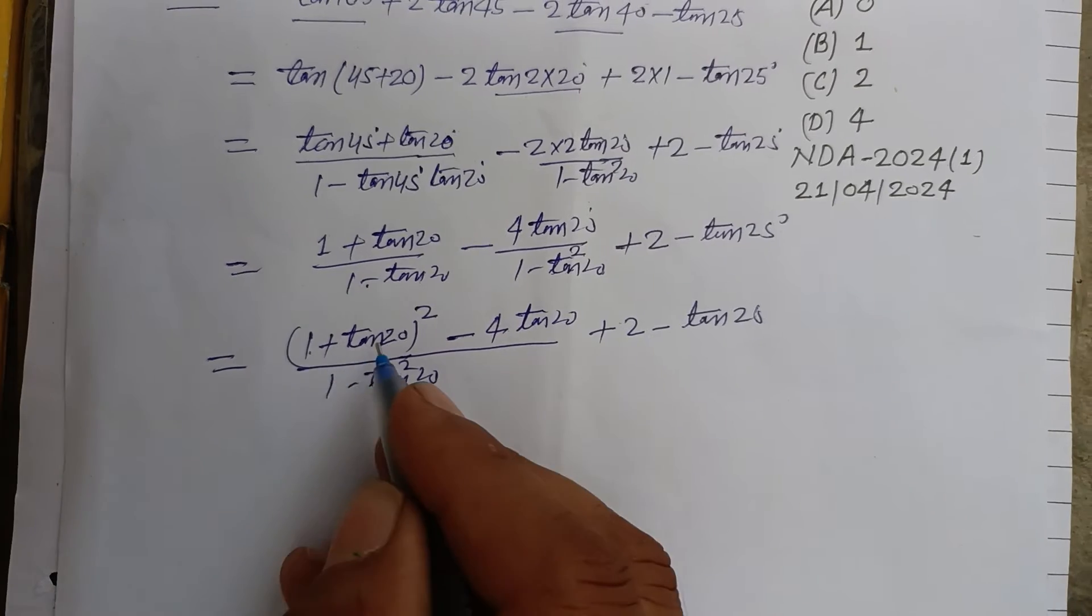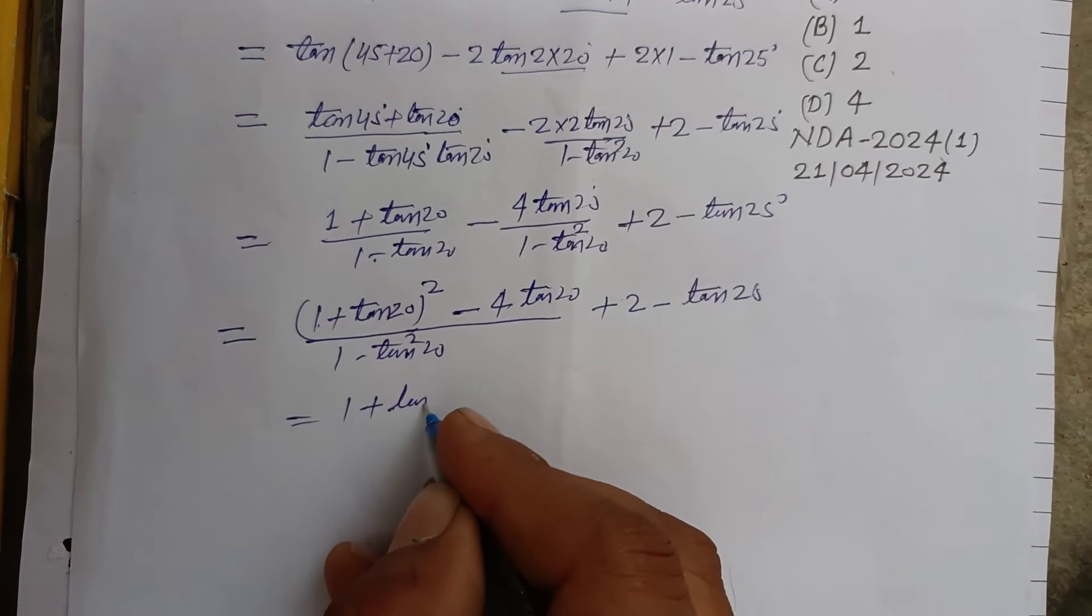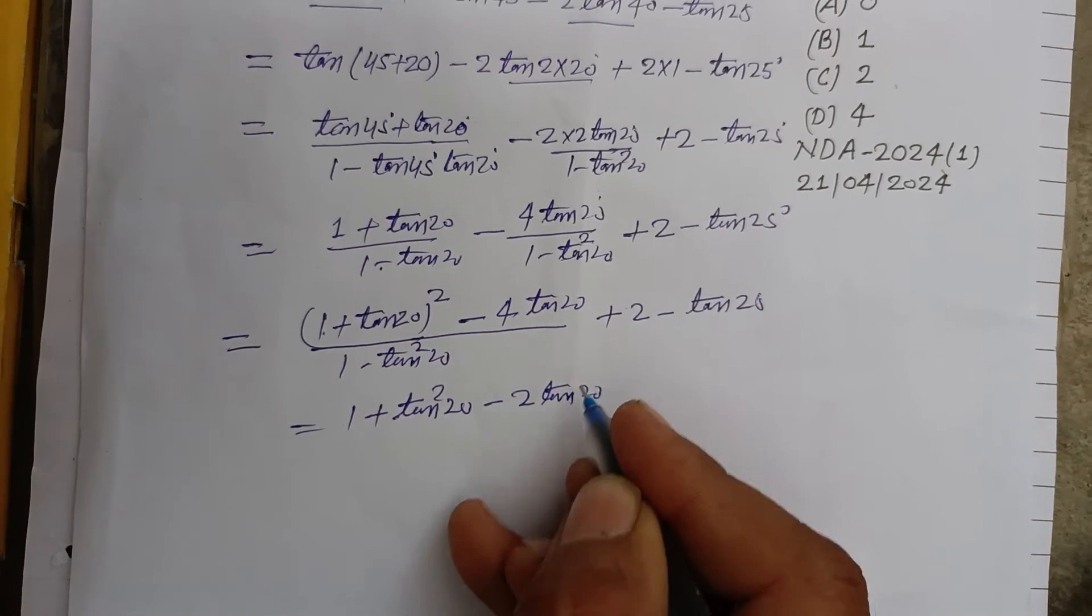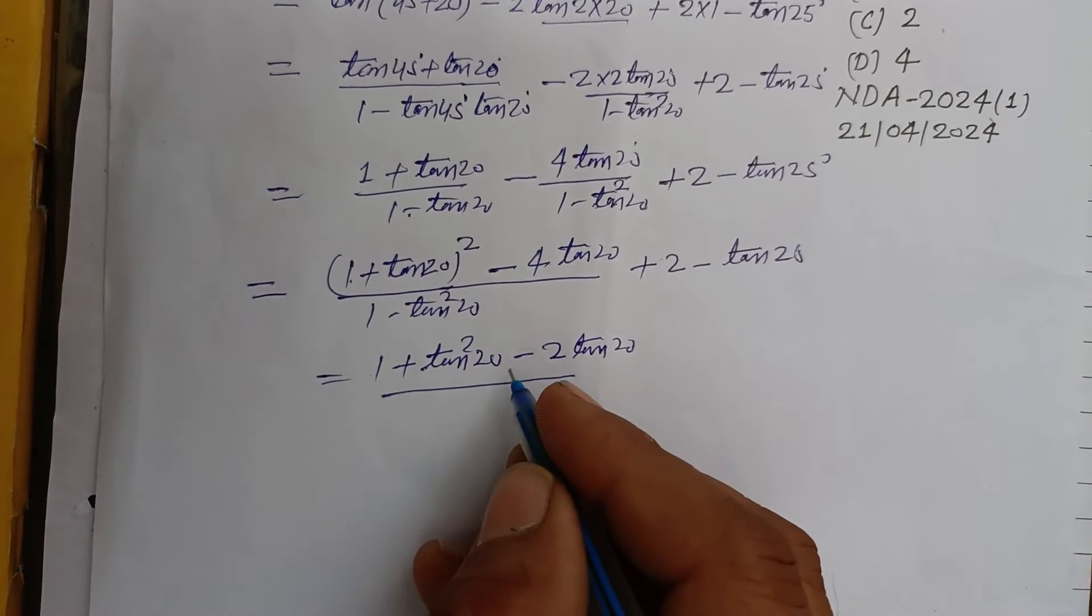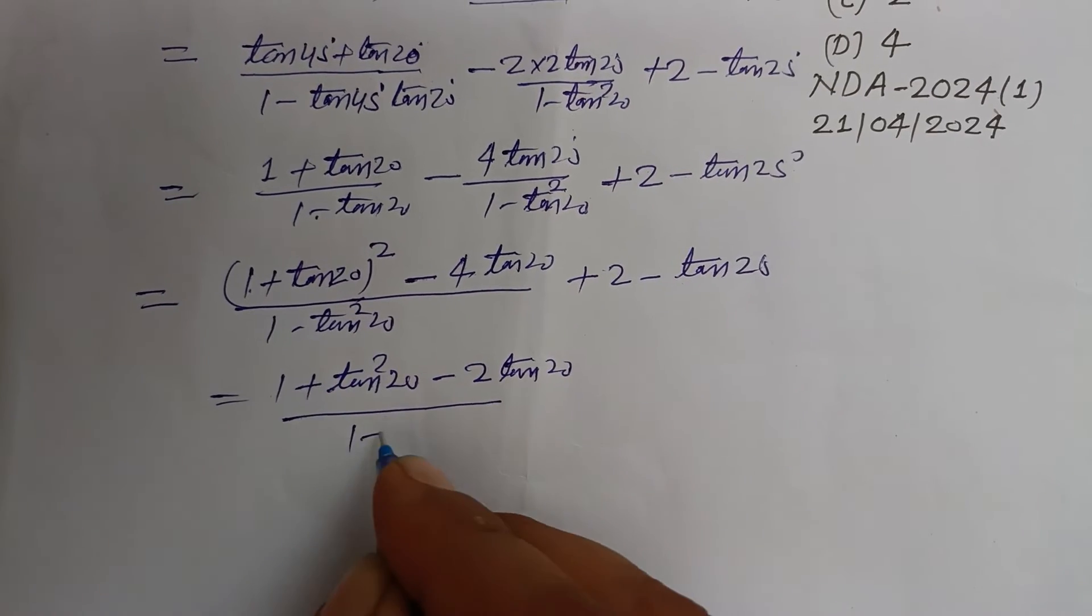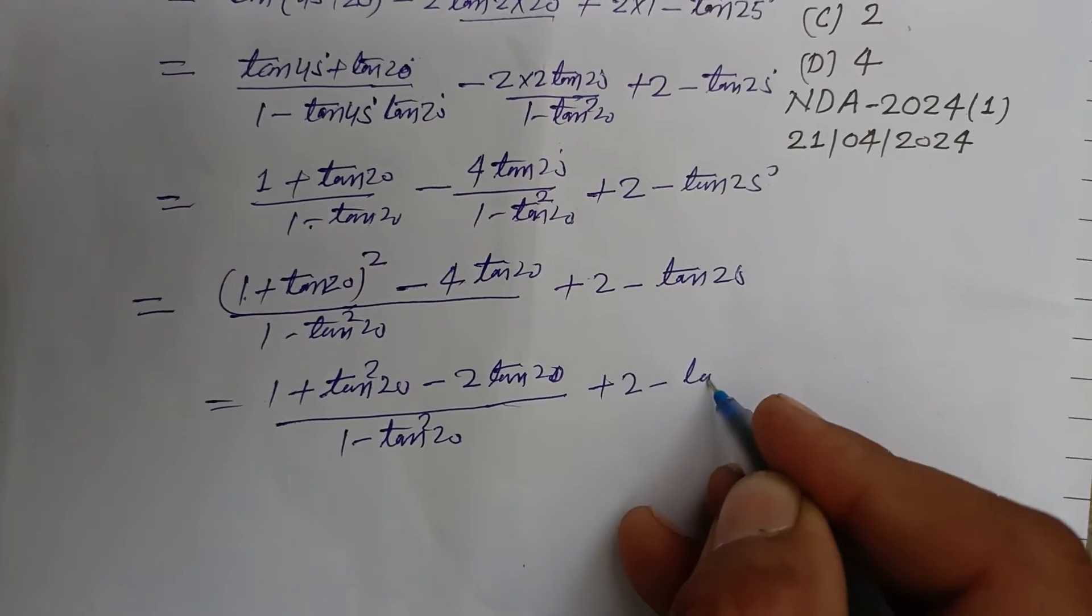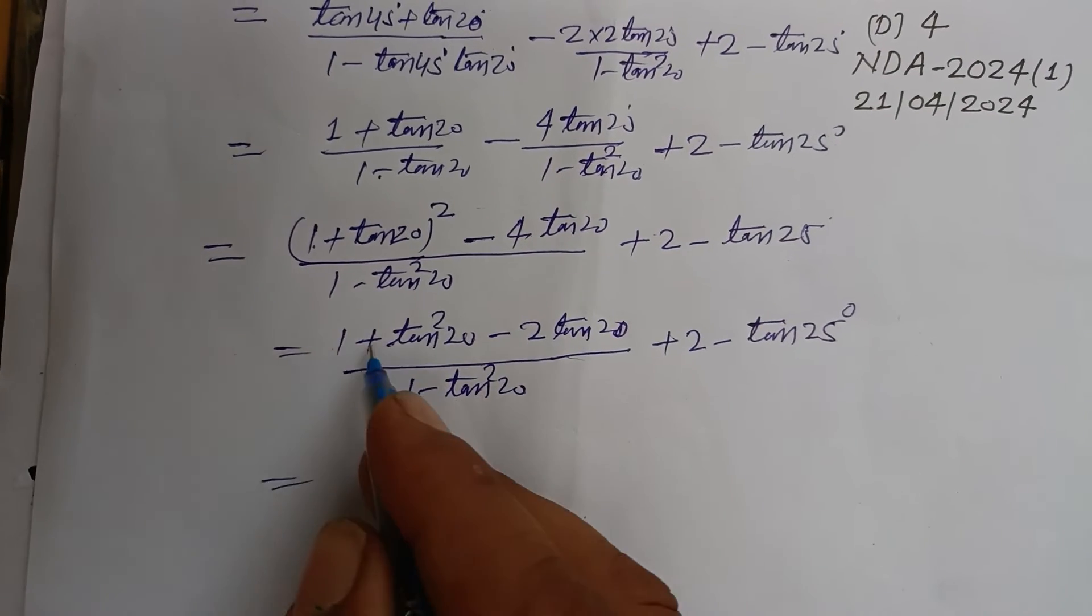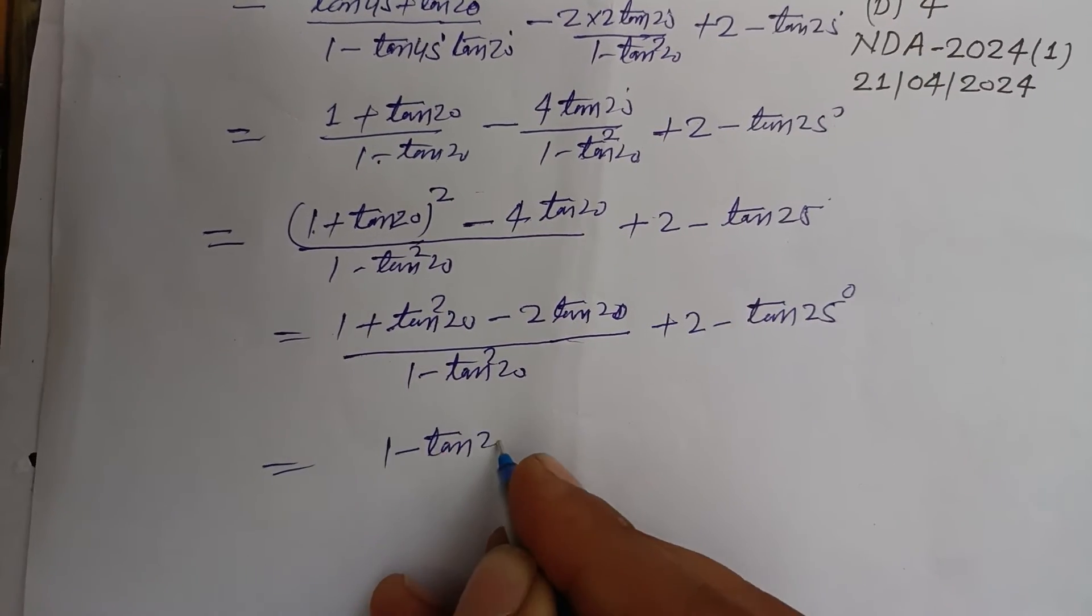Opening this using (a + b)² = a² + b² + 2ab, this becomes 1 + tan²20° + 2tan20° - 4tan20°, so 1 + tan²20° - 2tan20°, plus 2 minus tan25°.